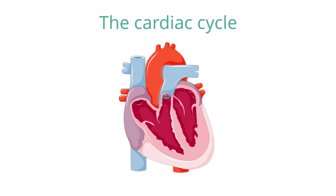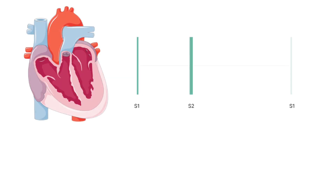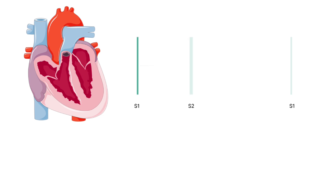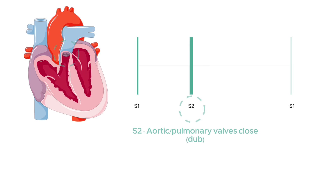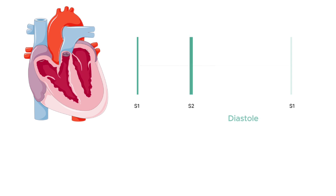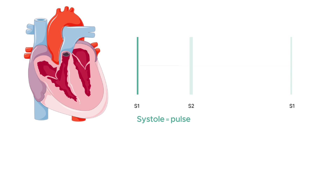A normal heart generally produces two sounds for each cardiac cycle: sound 1 and sound 2, known as S1 and S2 respectively. These sounds are produced as valve leaflets slam shut against one another. S1 occurs due to the closure of the atrioventricular valves and therefore indicates the start of ventricular systole, and S2 occurs due to the closure of the aortic and pulmonary valves, representing the end of ventricular systole. Ventricular systole occurs between S1 and S2, and diastole occurs after S2. You can palpate a central pulse at the time of auscultation — the sound occurring just before the pulse is S1 and the sound just after the pulse is S2.